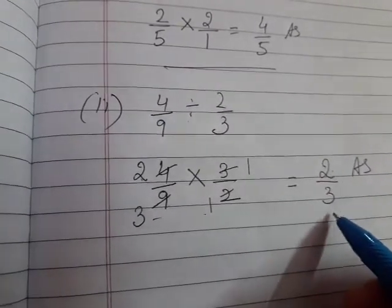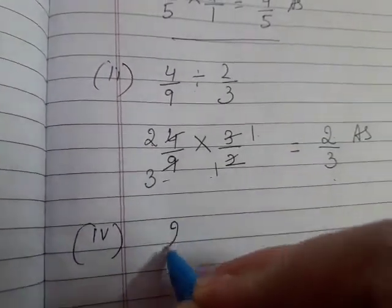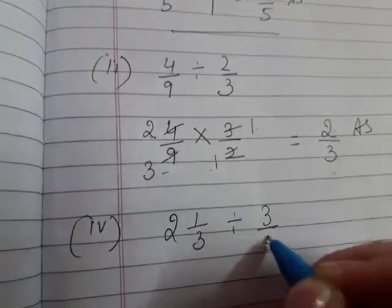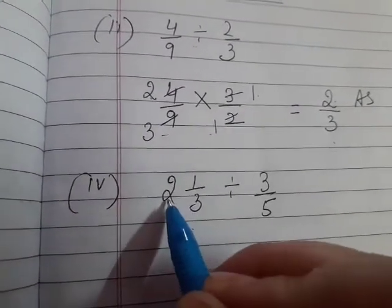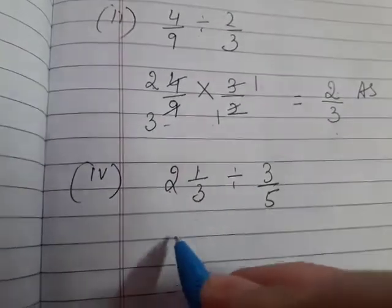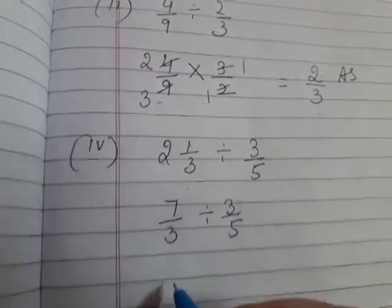Now next part: if you have a mixed fraction, your first step is to convert into improper fraction. How do we change to improper? Two threes are six, six plus one is seven by three, divided by three by five. Then you apply the multiply sign.